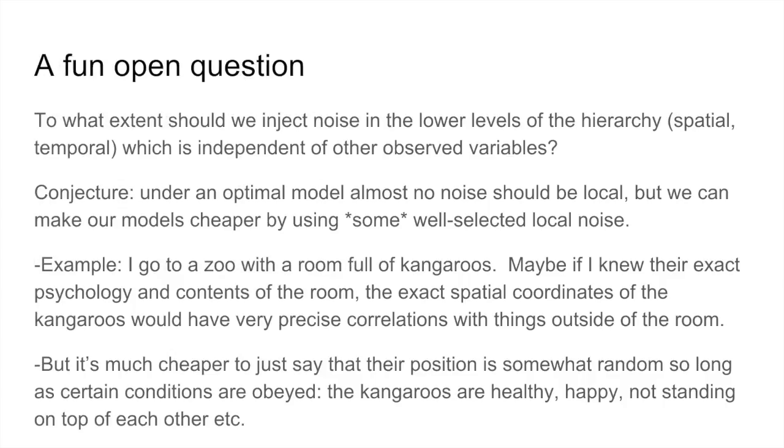So one fun open question is to what extent should we inject noise in the lower levels of the hierarchy, which is independent of other observed variables? So maybe one possible conjecture is that under an optimal model, almost no noise should be local, but we could make our models cheaper by using some well selected local noise. For example, if I'm going to a zoo and it has a room full of kangaroos, maybe if I knew before entering the room the exact psychology of the kangaroo and the contents of the room, there would be a way that I could figure out the exact spatial coordinates of the kangaroos. But in practice, it might be easier to just say that their exact position is going to have some randomness.